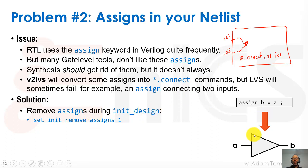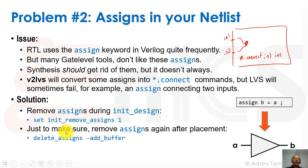If assigns are not removed by our synthesis tool, then we should do it inside our place and route tool. In Innovus, there are several ways. First, there's the set_init_remove_assign variable, which when we do init_design is supposed to remove the assign commands by inserting buffers. And just to make sure, we can remove them again after placement using delete_assigns minus add_buffer. So that's a second important thing — make sure you get rid of assigns or else you might have failures in your LVS way downstream.